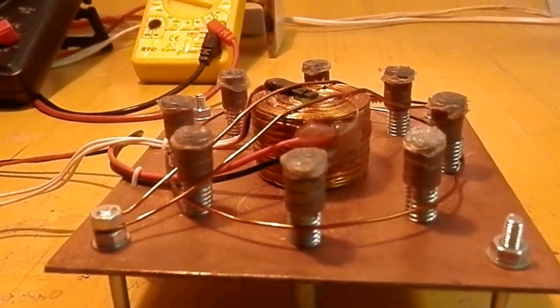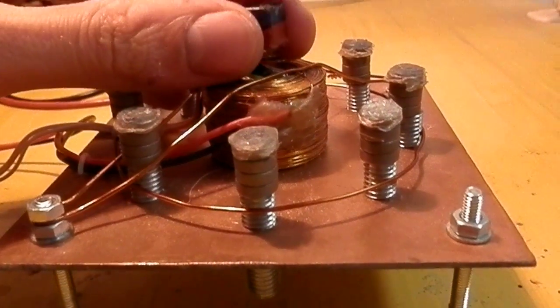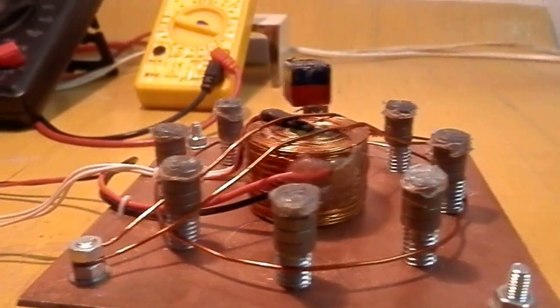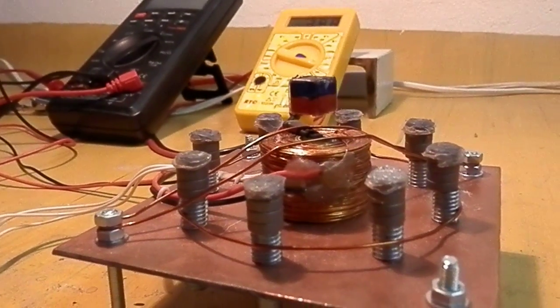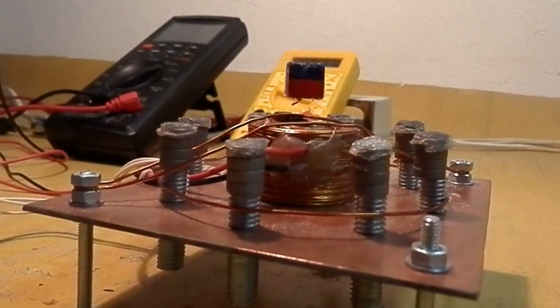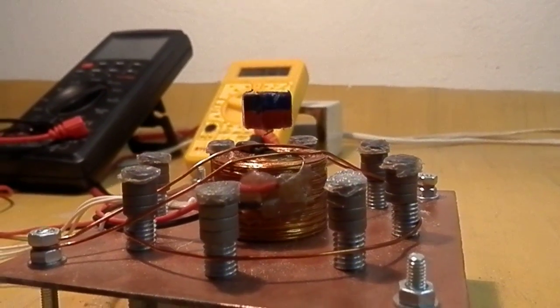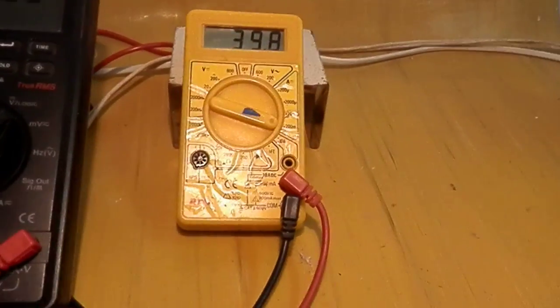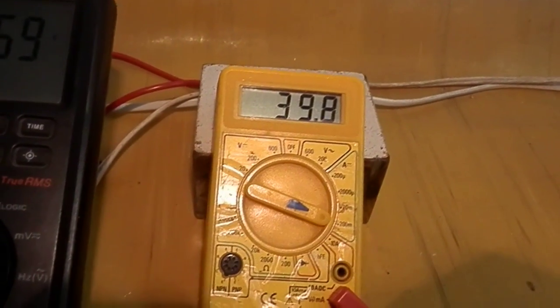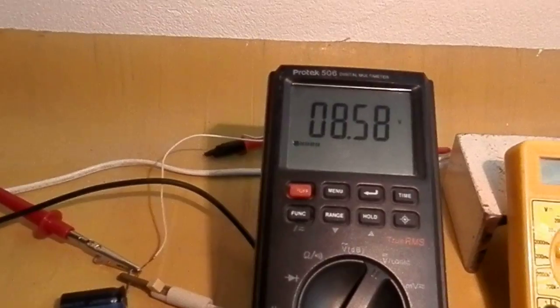You can see if I put a magnet in there it levitates. The levitation gap is about 8 millimeters and you can see the consumption of current. This is current in milliamps and this is voltage in volts.